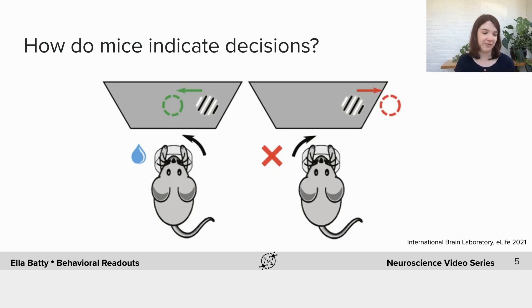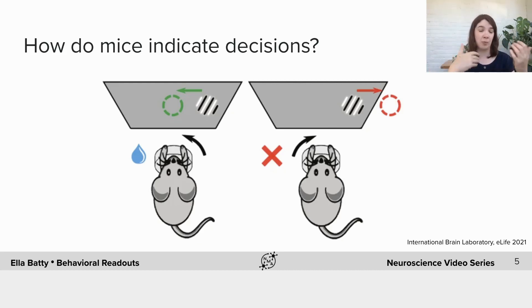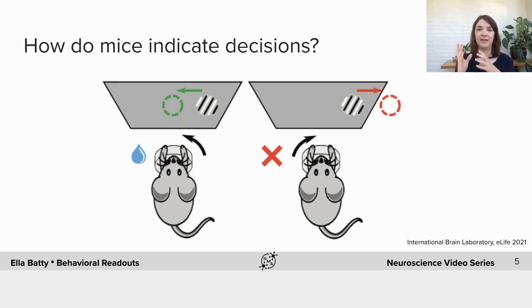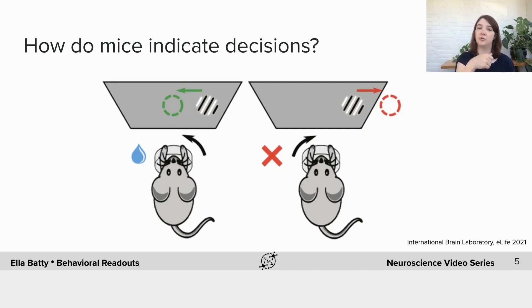This isn't the only way to read out decisions. You can also have two spouts and mice lick at one or the other to indicate their decision. You can have two ports and mice physically move and poke their noses into one of the two ports. With monkeys, it's common to just read out their decisions based on where they look — so they could look to the left or the right — or they could use a joystick to indicate their decision.